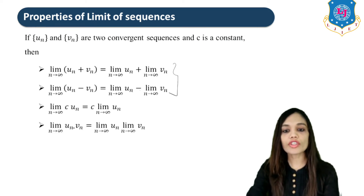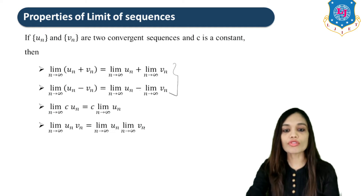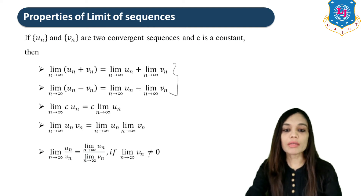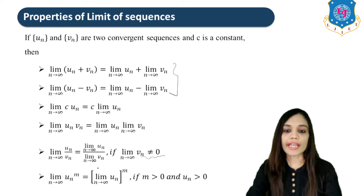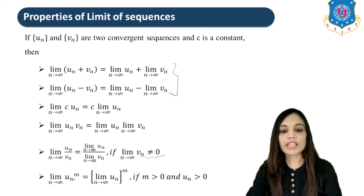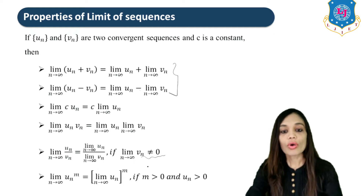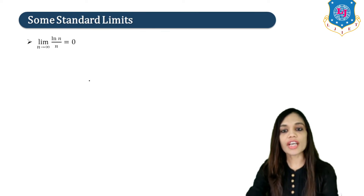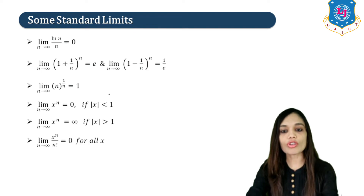Next, lim(UN · VN) = lim UN · lim VN. And lim(UN / VN) = lim UN / lim VN, provided lim VN ≠ 0. Also, lim(UN^M) = (lim UN)^M, only if M > 0 and UN > 0. These are some standard limits we will use to solve examples of sequences.